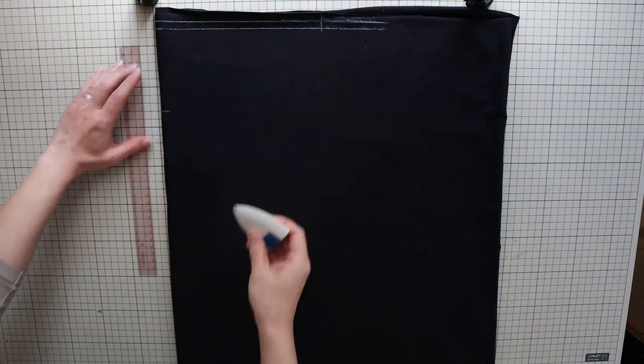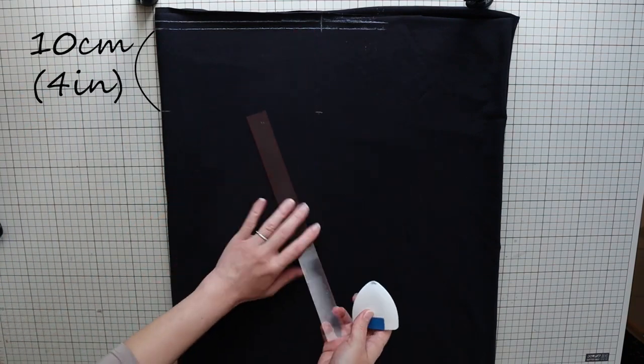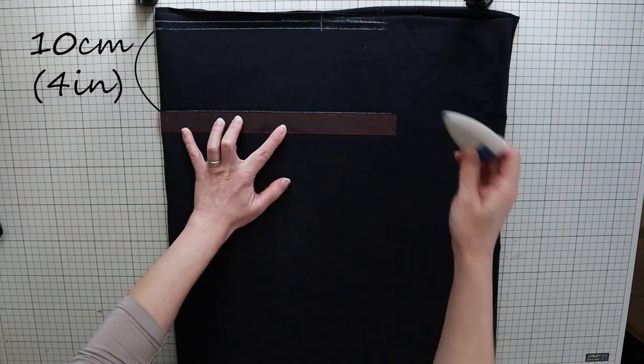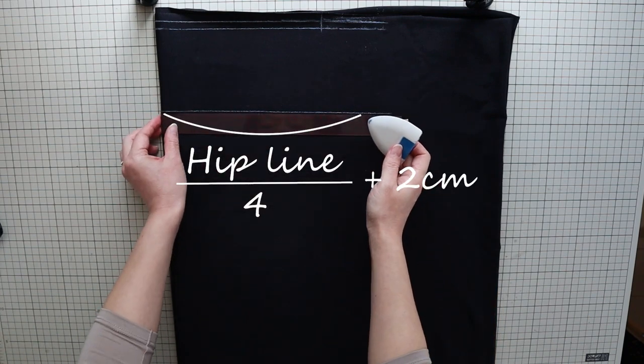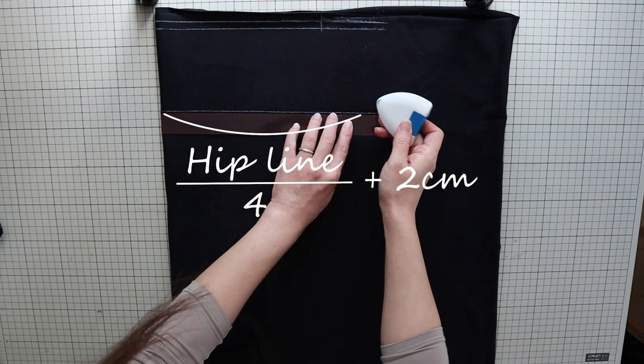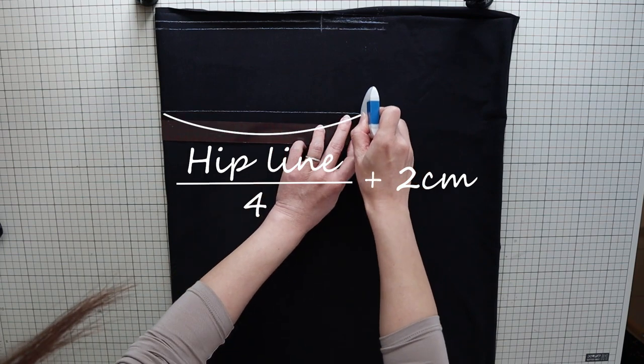Next, from this line, measure 10 centimeters or 4 inches and draw a horizontal line. Mark your hip measurement divided by 4 plus 2 centimeters or 3 quarters of an inch and mark it on the line.